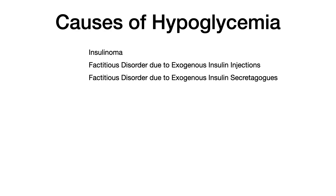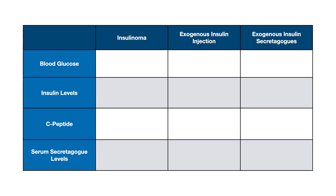These three things present similarly because they all present with signs and symptoms of hypoglycemia, and the test writer wants you to differentiate them based on labs and occasionally risk factors. Looking at this comparison table: obviously, all three will have low blood glucose and elevated insulin levels. An insulinoma produces insulin that drops blood glucose; injecting insulin raises insulin levels; consuming a secretogog leads to insulin production — all causing hypoglycemia. These first rows are included for completeness.